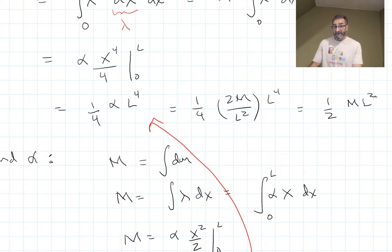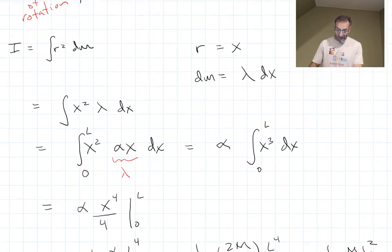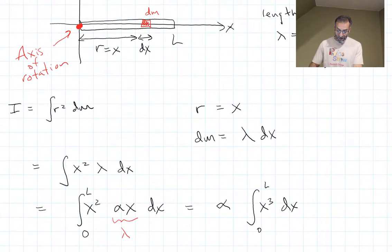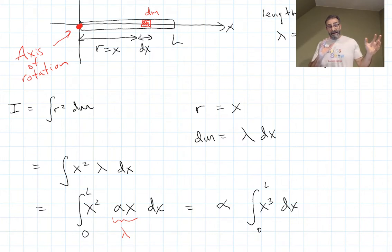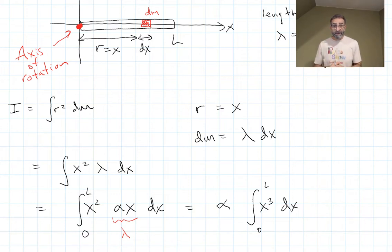Let's think about this and see if it makes sense. We did a rod rotating about its endpoint with uniform density and got one-third M L squared. This rod has more and more mass out at the end, far away from the axis of rotation, so we'd expect I to be bigger than one-third M L squared. And it is — one-half is bigger than one-third. So our answer makes sense.